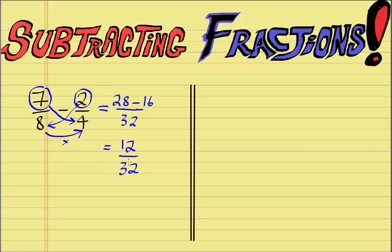What we have here is a fraction that can be simplified down. So we can divide the 12 by 4 and divide the 32 by 4 — look for a number that both can go into. 12 divided by 4 is 3, and 32 divided by 4 is 8. And 3/8 is our final answer.